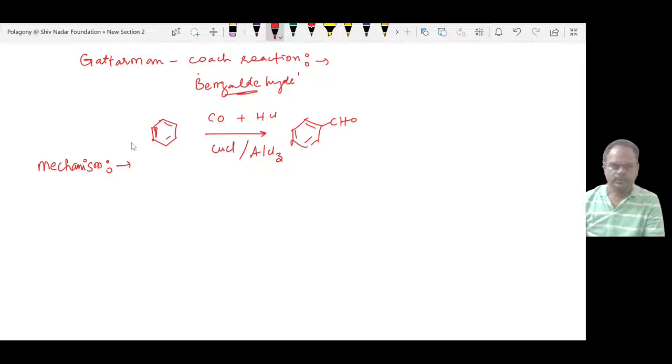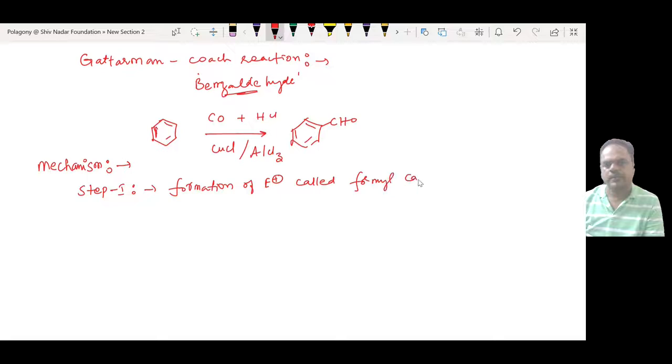The Gattermann-Koch reaction has two steps. Step 1 is the formation or generation of an electrophile called the formyl cation, HC=O+.